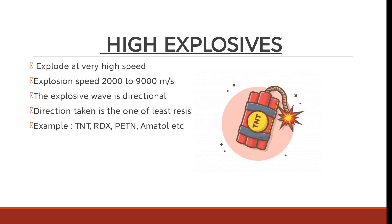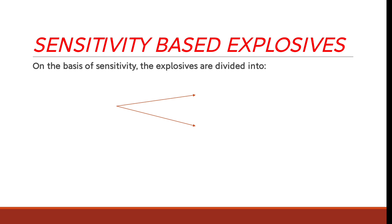High explosives explode at very high speed — their explosion speed is 2,000 to 9,000 meters per second. The explosive wave is directional, taking the path of least resistance. Examples include TNT, RDX, PETN, and HMTD. These high explosives are the main concern for forensic analysts and are used primarily for military purposes. We will discuss each in detail in the next video.